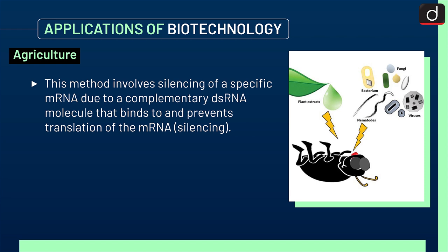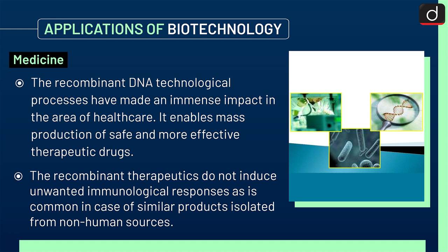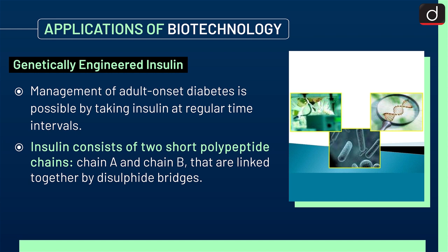Next is medicine. Recombinant DNA technological processes have made an immense impact in the area of healthcare. It enables mass production of safe and more effective therapeutic drugs. The recombinant therapeutics do not induce unwanted immunological responses, as is common in case of similar products isolated from non-human sources. Next is genetically engineered insulin. Management of adult-onset diabetes is possible by taking insulin at regular time intervals. Insulin consists of two short polypeptide chains — chain A and chain B — that are linked together by disulfide bridges.